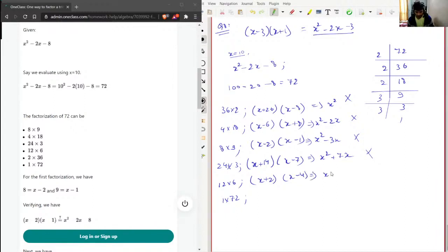This will work, yeah. So this will be x square, then this will be plus 4 minus 4, plus 2 will be minus 2x, and 2 times minus 4 will be minus 8. Yeah, so for the combination of 12 and 6, this will get the solution.